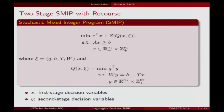Let me set up some notation here — my notation will be just a little bit different. I'm going to be focusing on stochastic mixed integer programs, and for simplicity on the two-stage case. This is what the problem looks like. We have our first-stage variables x — these are the here-and-now decisions we have to make before observing uncertainties. They satisfy some constraints, and we have some continuous variables and some integer variables.